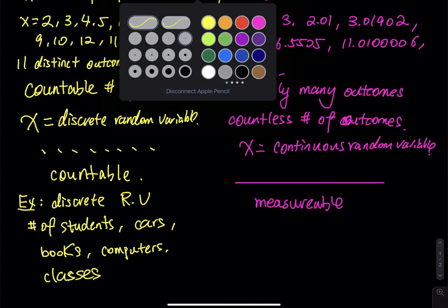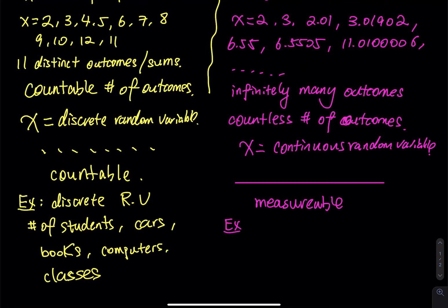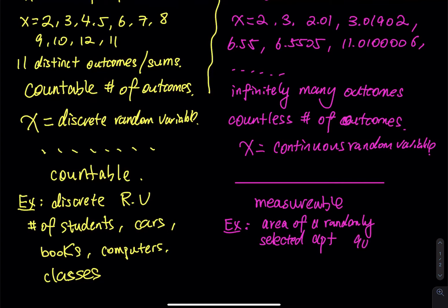On the other side, for continuous random variables, consider the area of a randomly selected apartment. You can't just say 900 — 900 of what? You give a number followed by a unit: 900 square feet, 1,000 square feet, 2,000 square feet. That is continuous — not countable. You cannot use your finger to count how big a room is, but you can measure it.